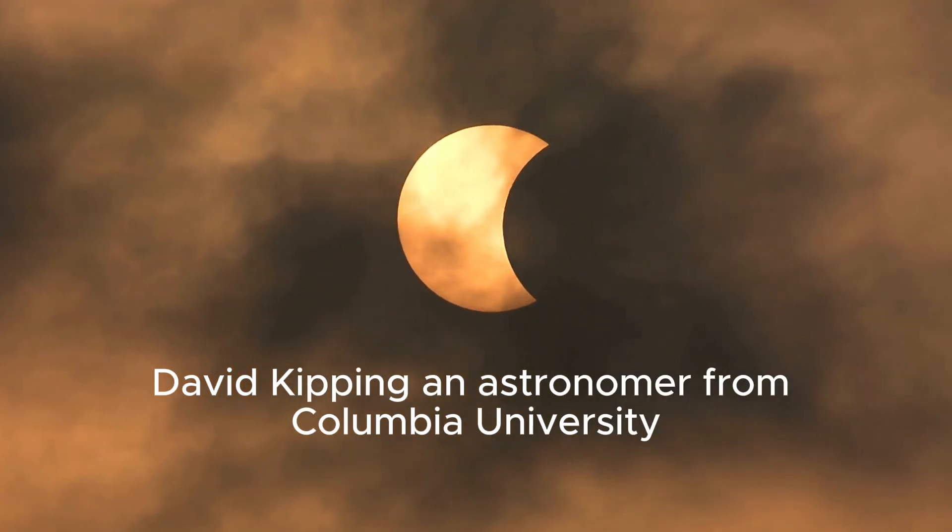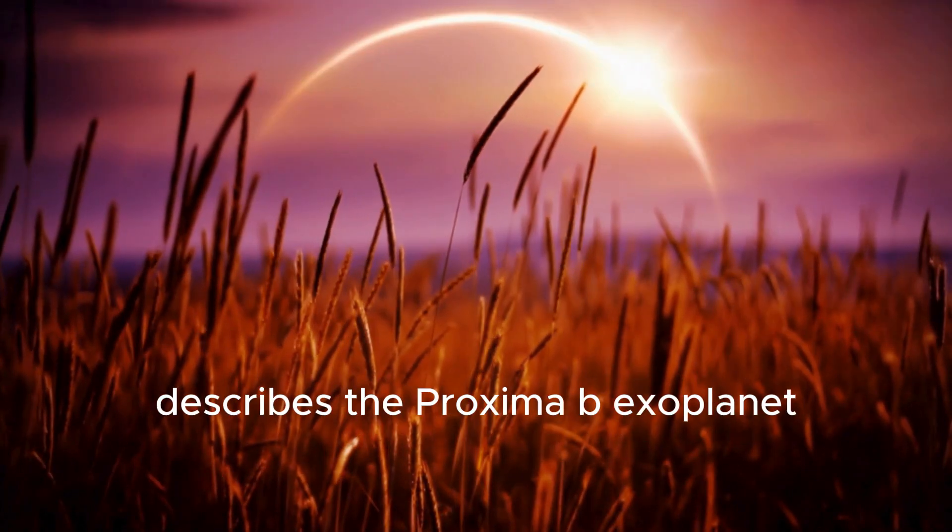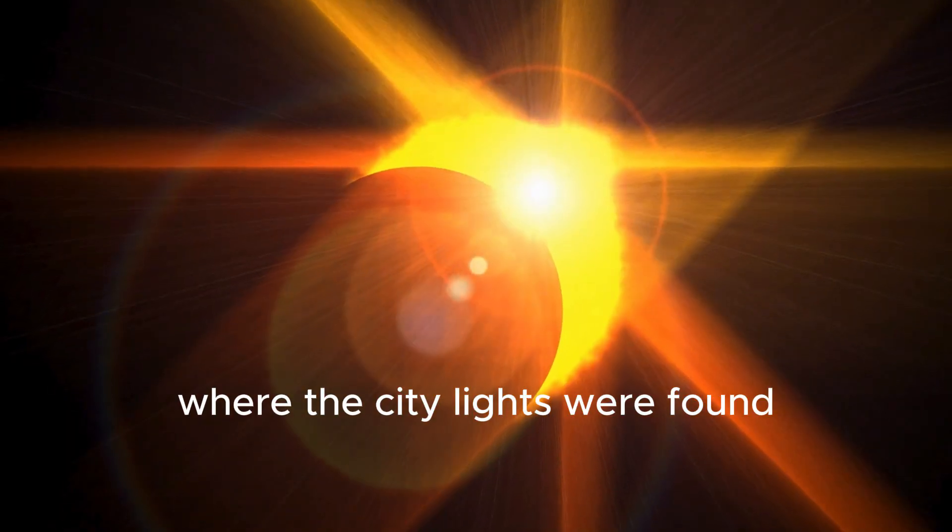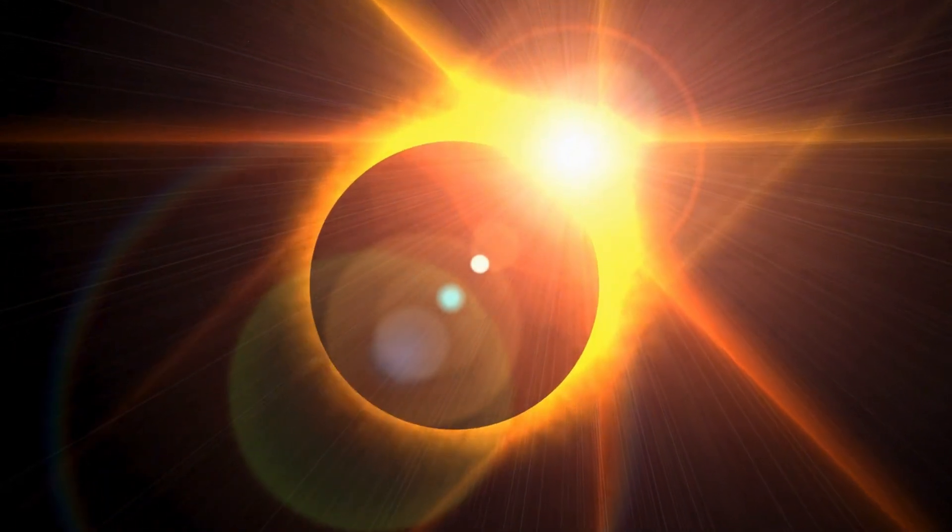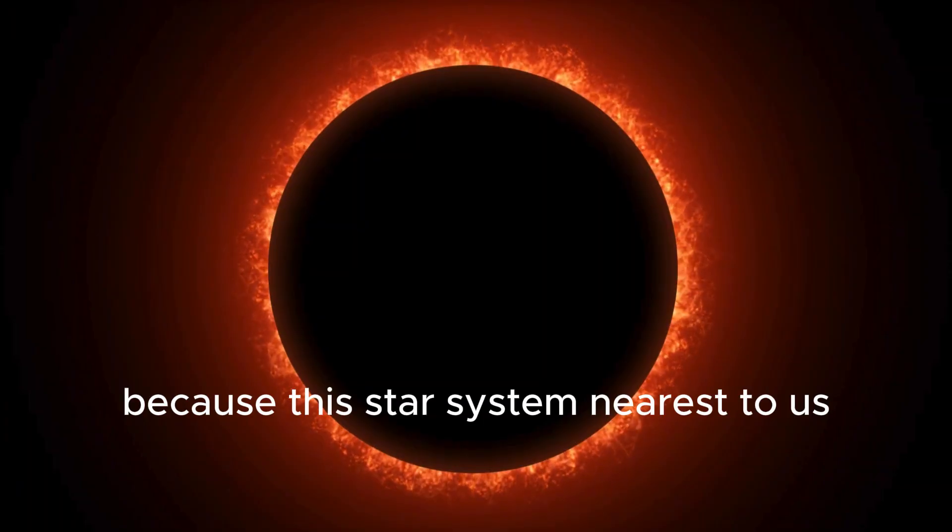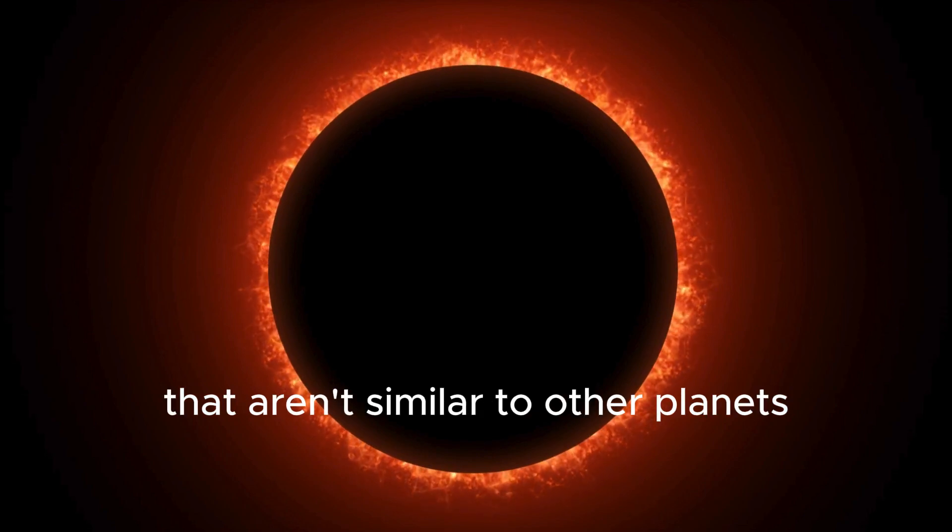David Kipping, an astronomer from Columbia University, describes the Proxima b exoplanet as tricky. He said so because this star system nearest to us has varied heating patterns that aren't similar to other planets.